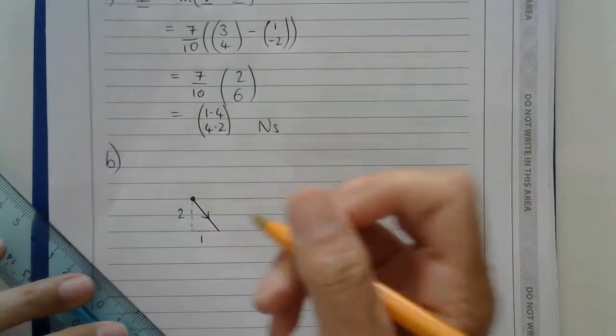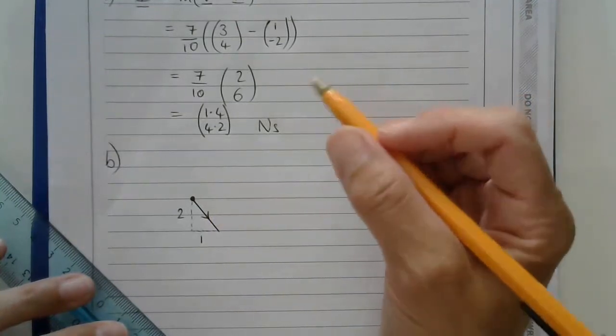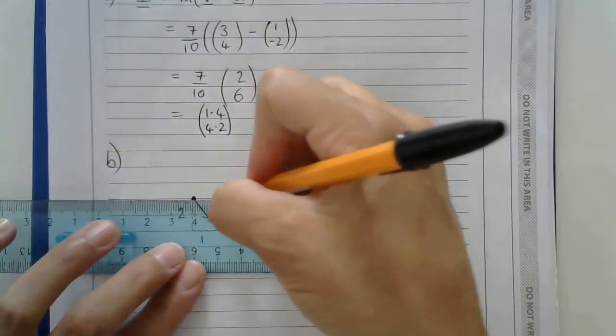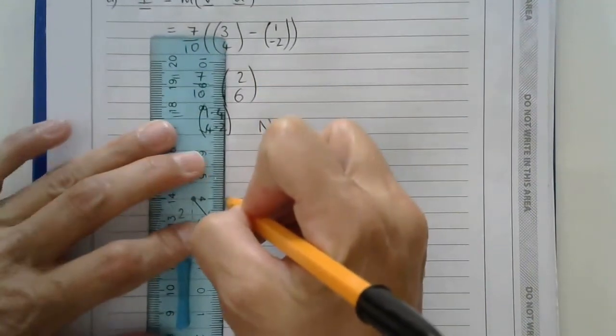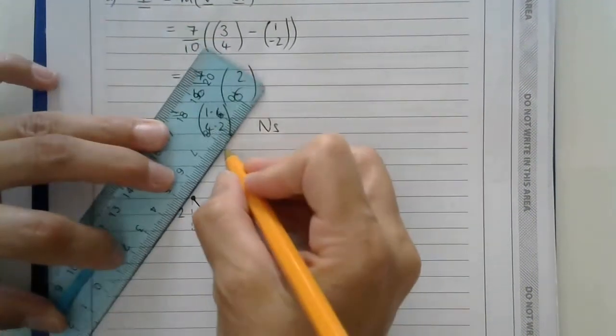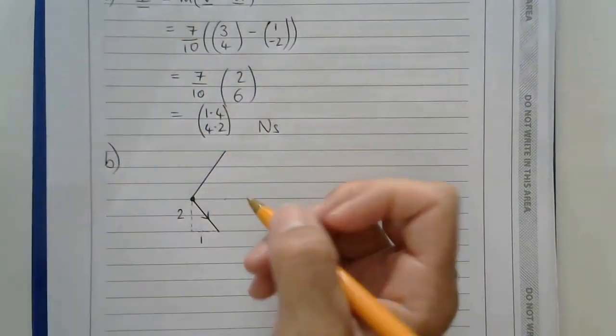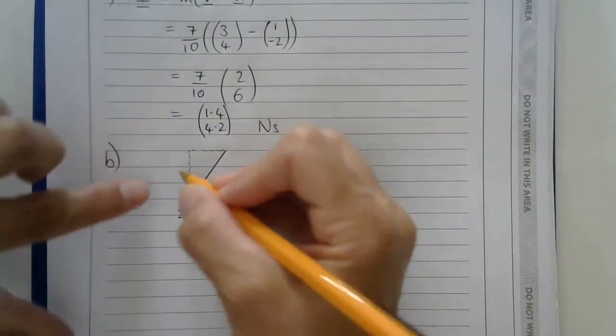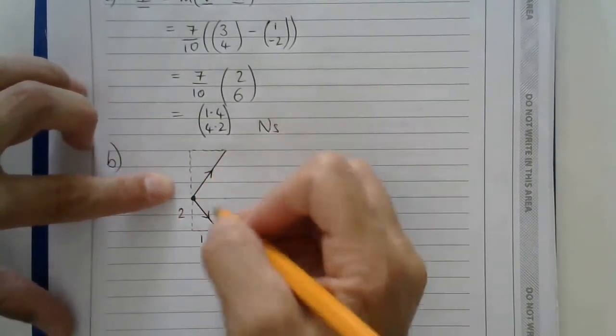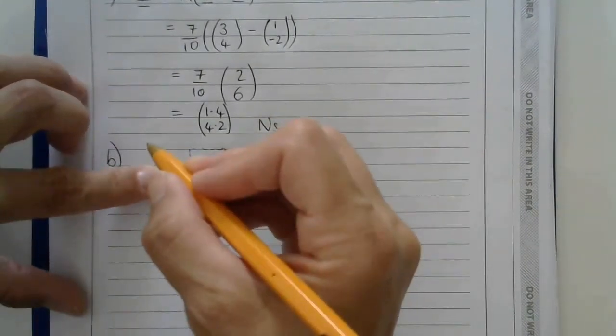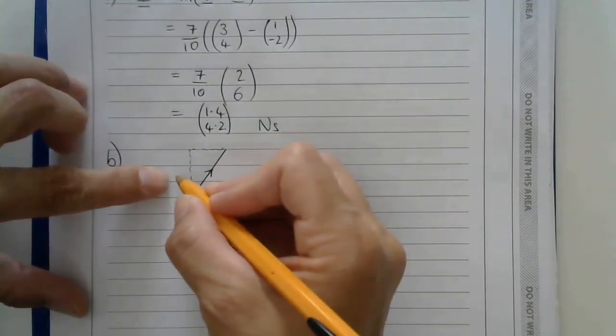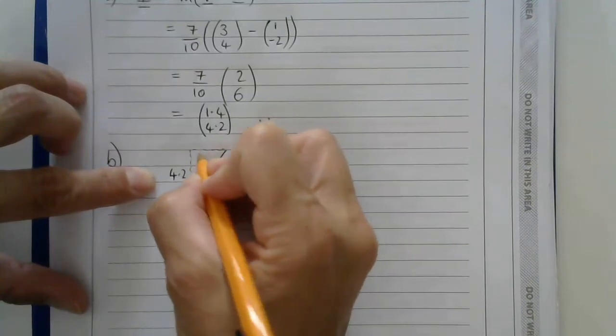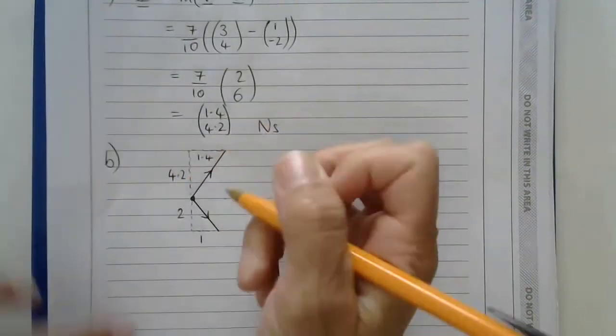And the direction of the impulse is this. So it's in the positive i direction something and then in the positive j direction another amount. I can see that I'm just drawing the lengths on this side so as to not get in my own way, as it were.